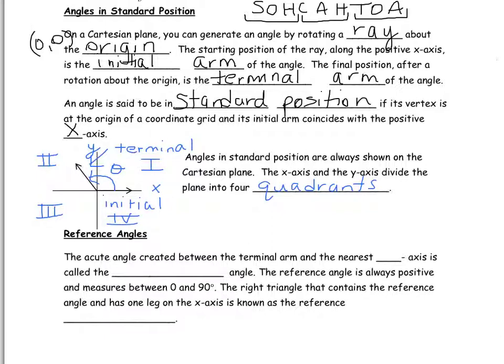The angle theta is our angle in standard position. Notice the vertex of our angle is right at the origin. The initial arm is along the positive x-axis, and the terminal arm could be in any of the four quadrants. In the example we have here, the terminal arm is in quadrant two.